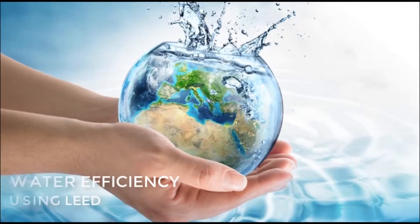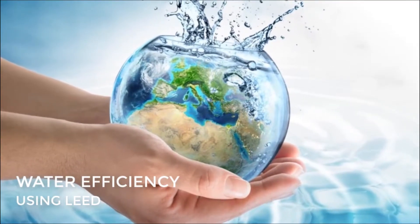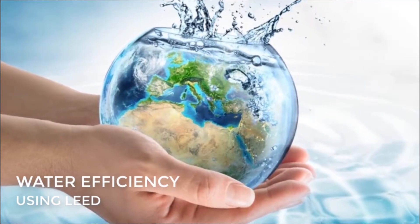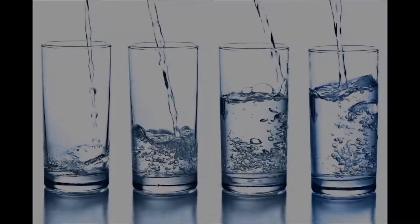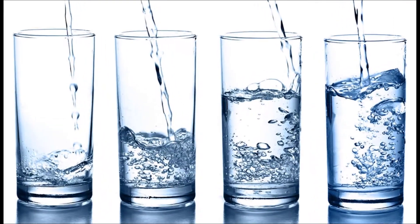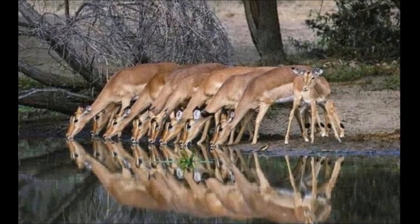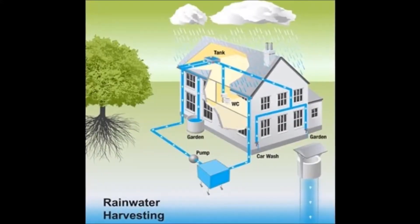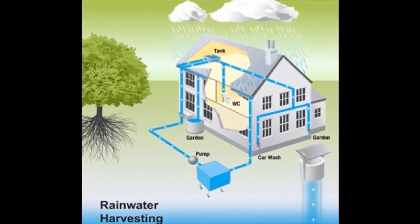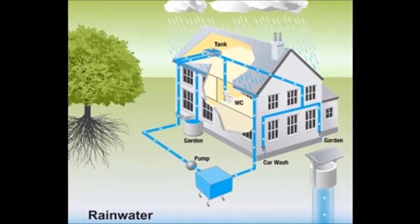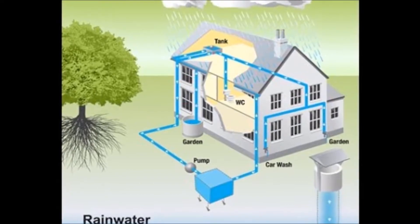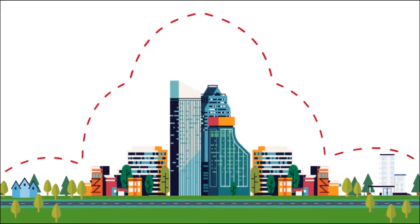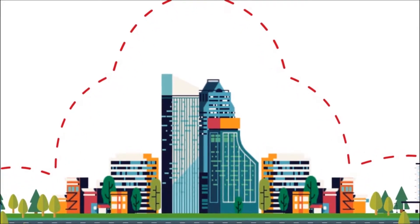Water Efficiency: Use water-efficient fixtures inside the building to conserve water, as it is a scarce resource. Water is a permanent need of humans and animals for their existence on the planet. We can harvest rainwater and use it for irrigation, which reduces the demands on water aquifers and helps reduce the heat island effect.